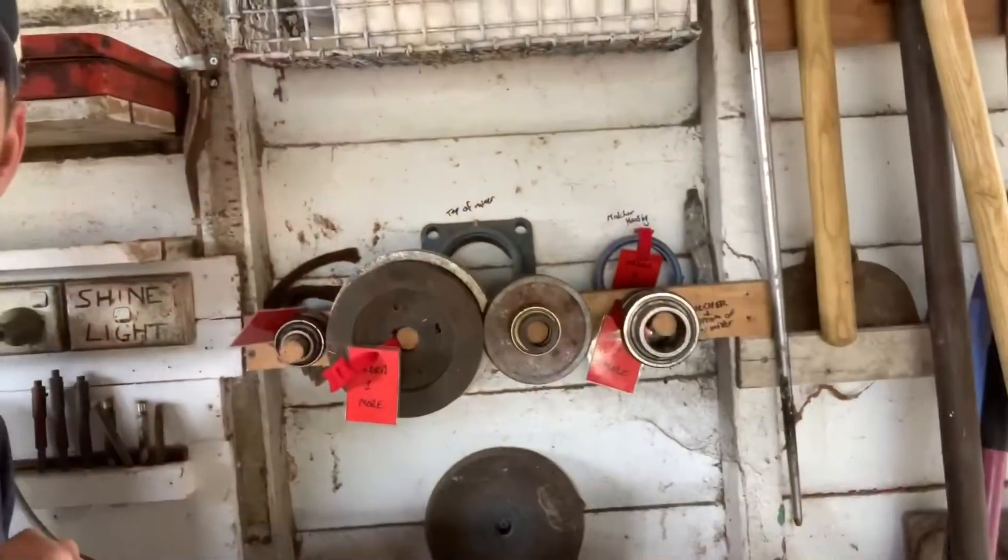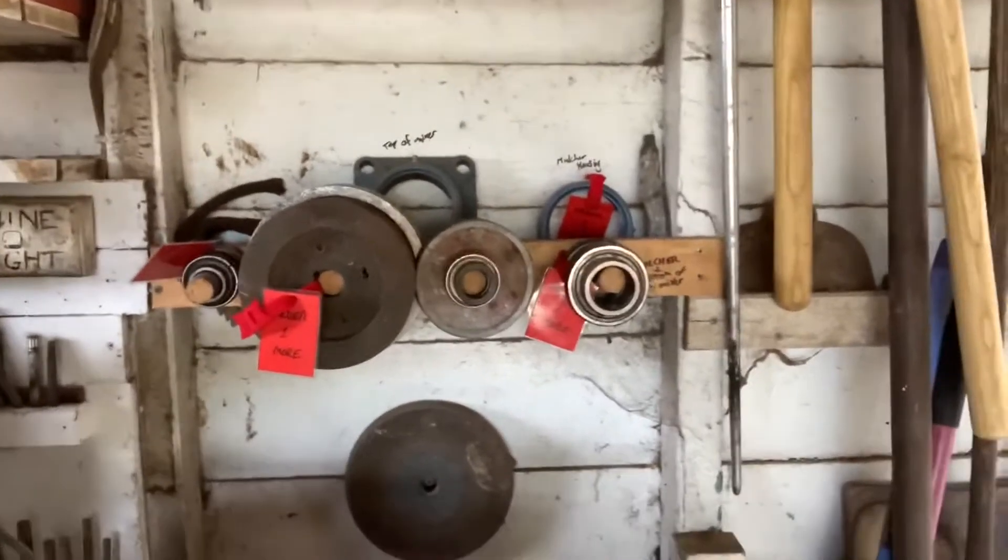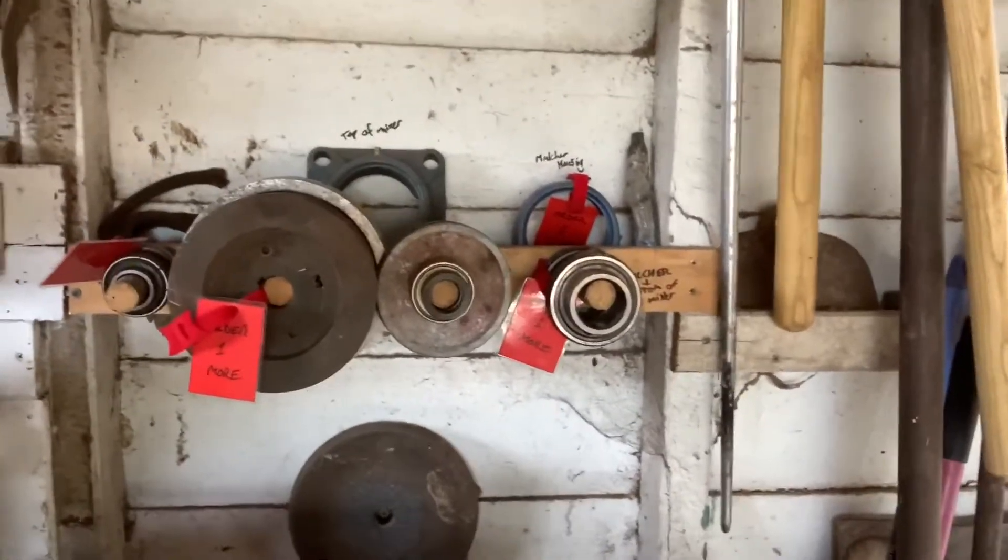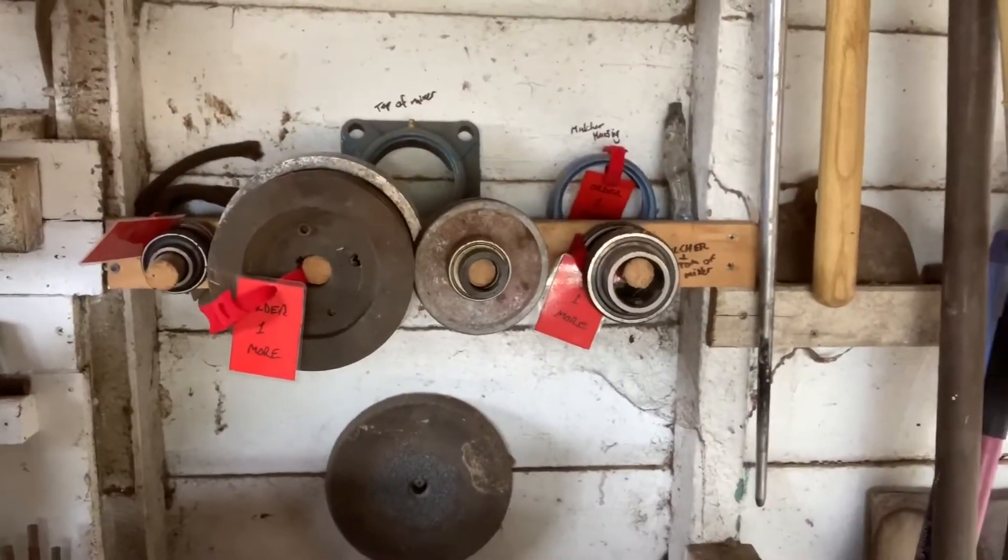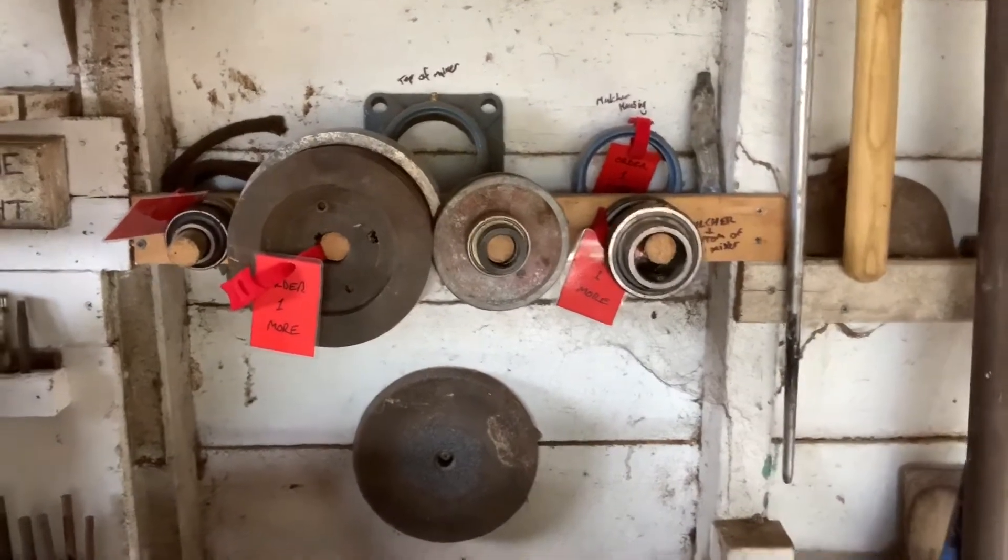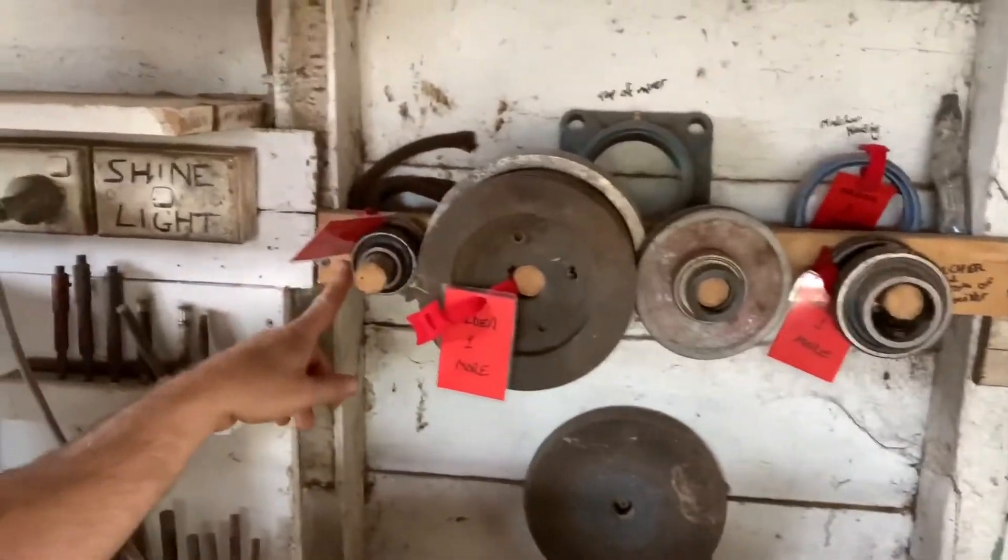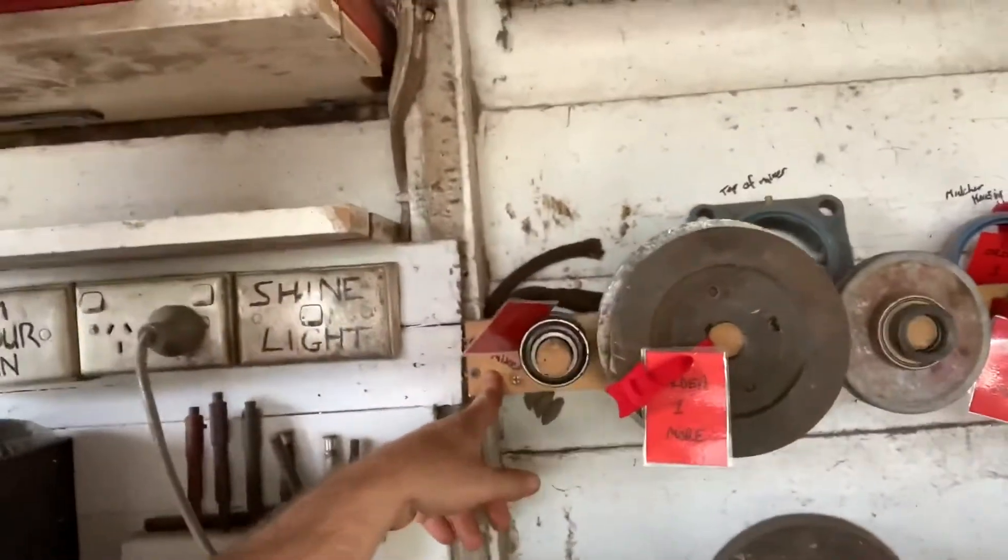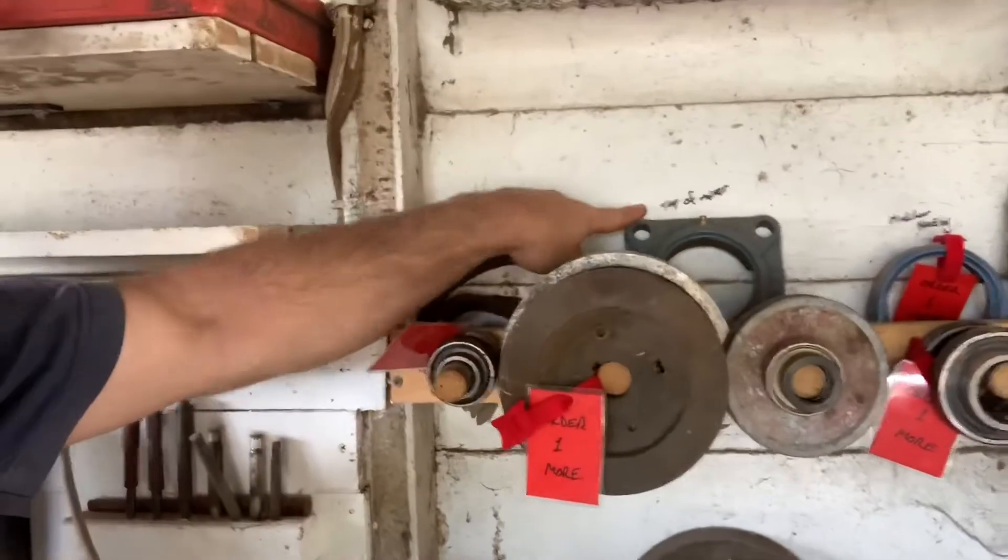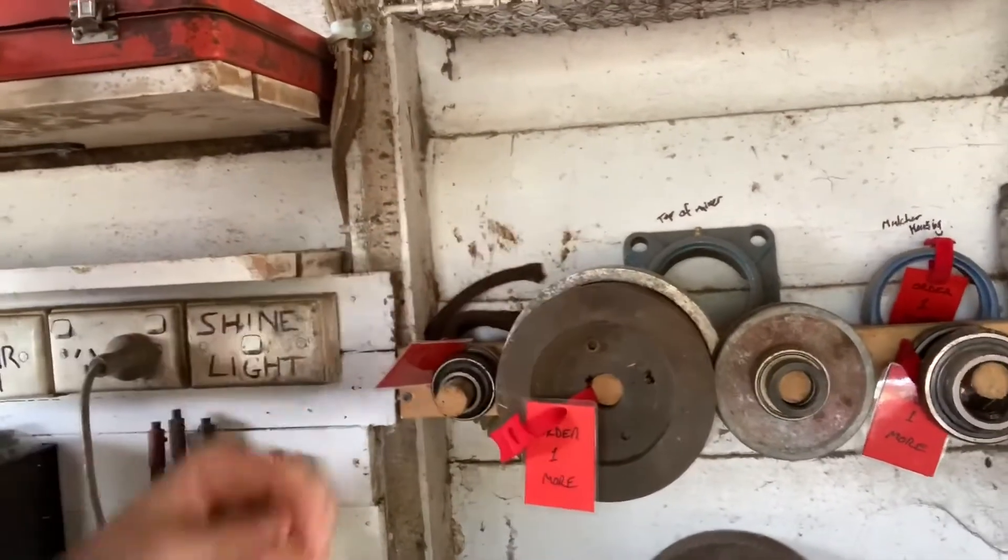I'll show you another example. So this is another Kanban system on the farm. These are the essential bearings for any of the equipment on the farm that will get us going quickly. We've got the same tag system, we've got writing up here to tell us what it is, what